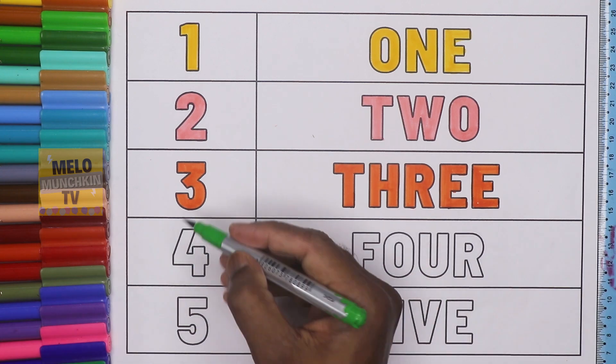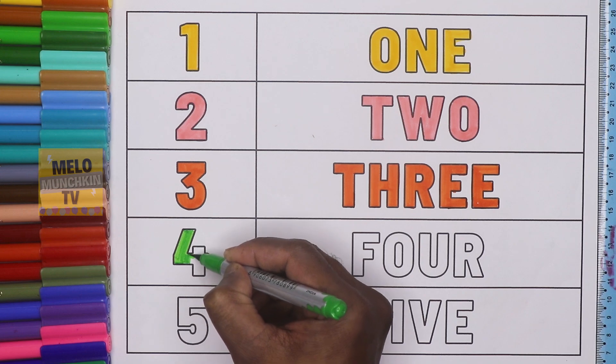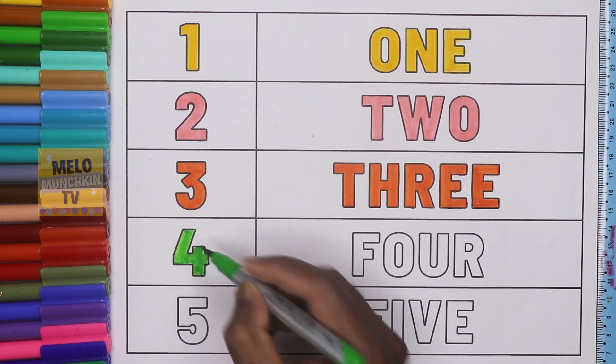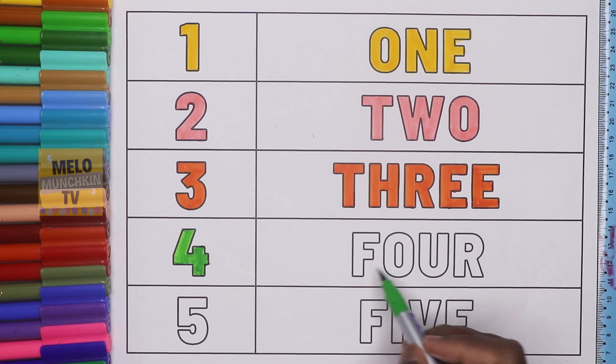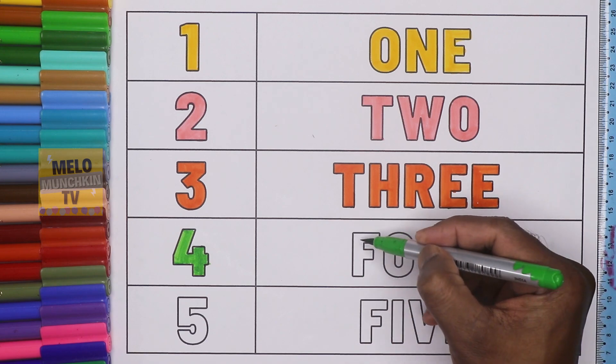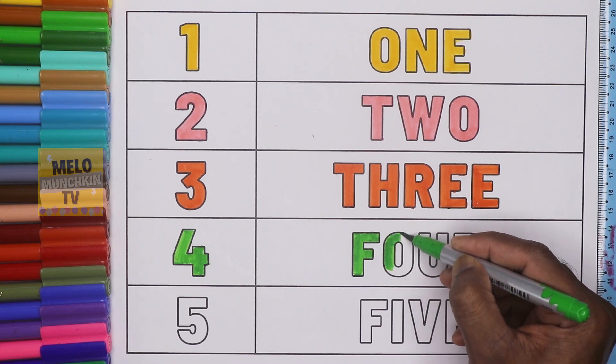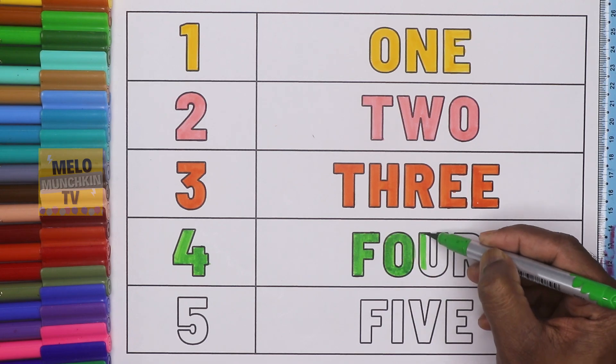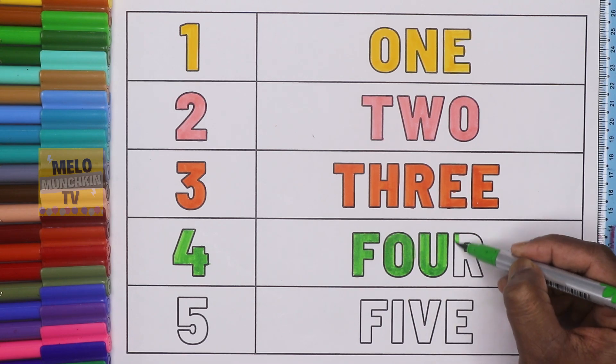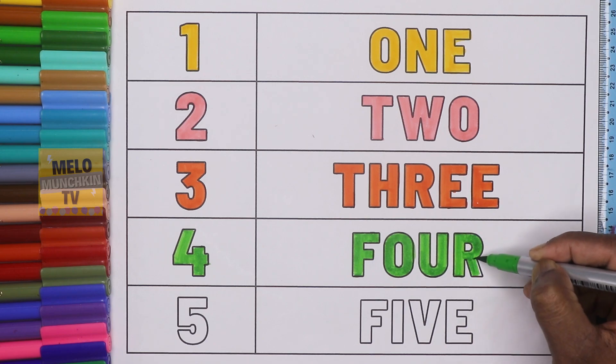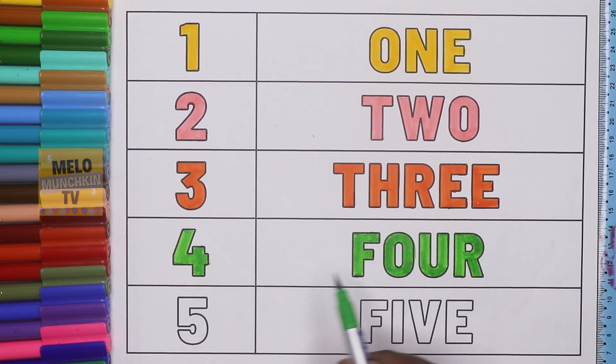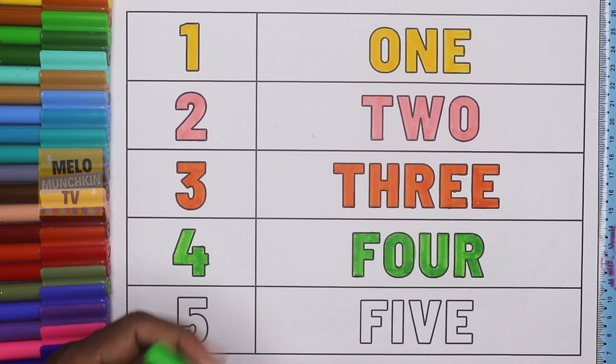Let's color it. So this is number 4 and what is the spelling? F-O-U-R. Let's color it. F-O-U-R, F-O-U-R, 4, F-O-U-R, 4, and this is light green color.